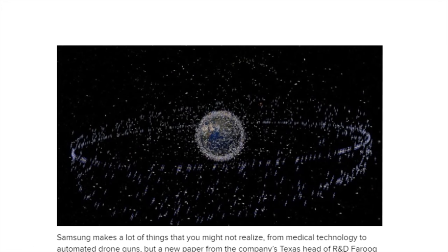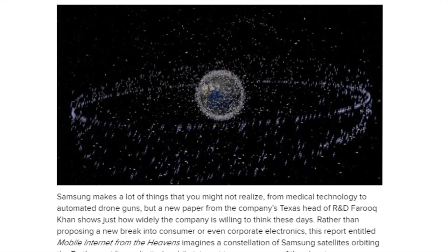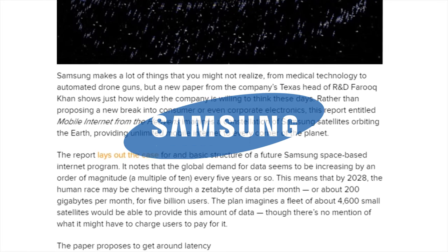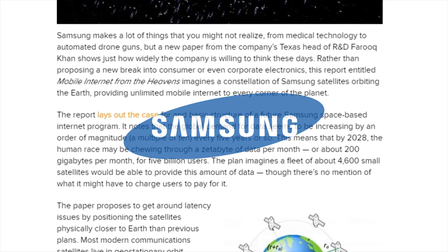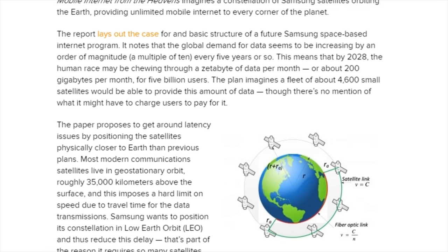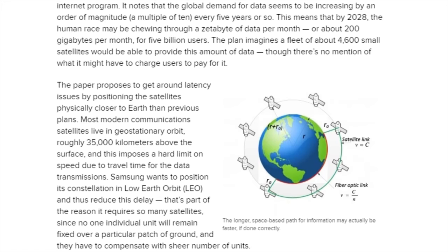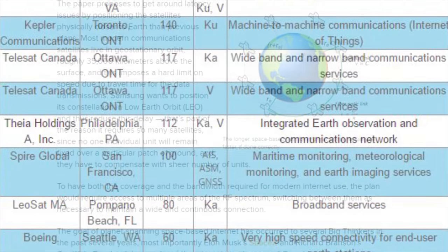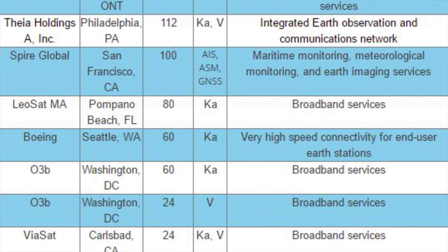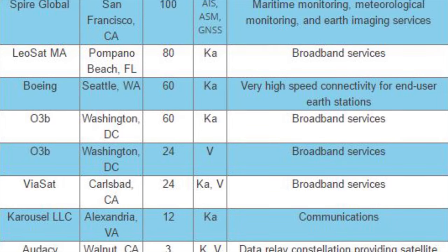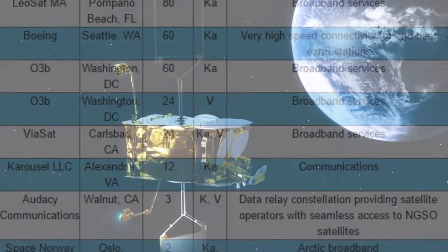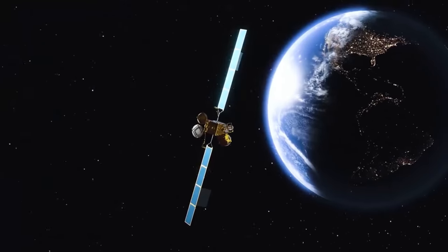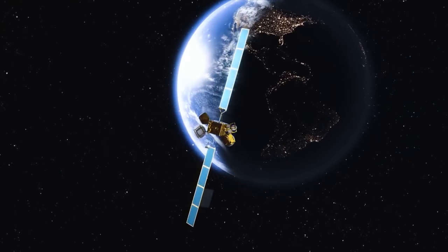Competition in this global broadband through satellite industry is steadily increasing. Samsung announced plans for a 4,600 satellite constellation, and various other companies are also planning on launching smaller constellations ranging between 25 to the low hundreds. Regardless, competition is a great tool in driving industries forward, and ultimately leads to a better world for the majority of the population.